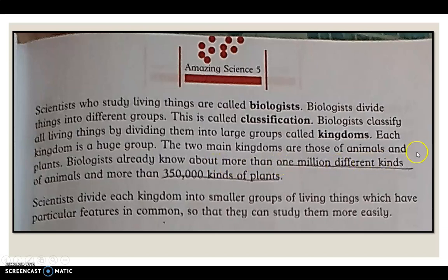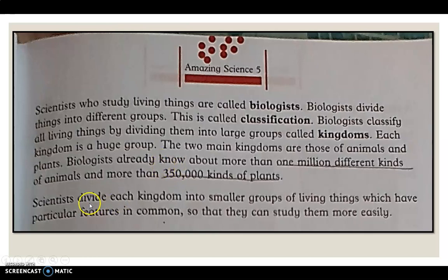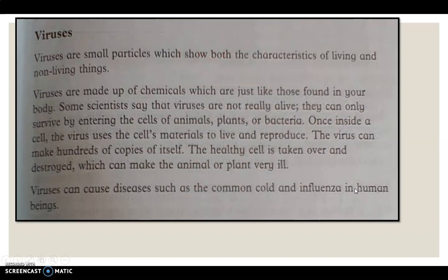There are millions of different kinds of animals and more than 350,000 kinds of plants. Scientists have divided all living things into two large groups called Kingdoms. One is the animal kingdom and the other is the plant kingdom. Scientists divide each kingdom into smaller groups which have particular features in common, so that they can study them easily.